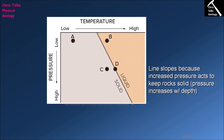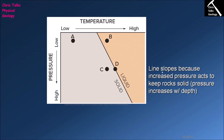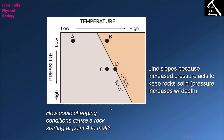We have four points to discuss. How could we change conditions to cause a rock to start melting at point A? Well, what would happen if we were to increase the temperature and keep the pressure constant? If we keep increasing the temperature, eventually we're going to reach a point where rock A hits the solidus, at which point it will start melting, and then once it's fully melted it will go into the liquid field marked out by point B.